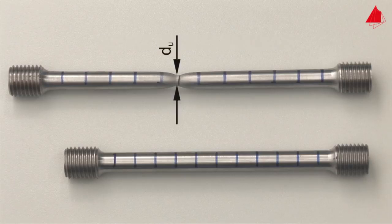By measuring the smallest diameter at the point of fracture, the percentage reduction of area can be calculated. It describes the reduction of cross-sectional area at the point of fracture in relation to the original cross-sectional area.